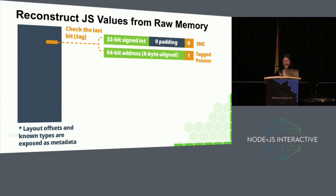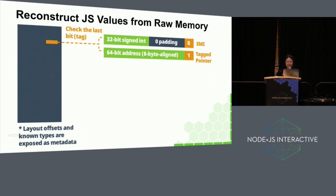Now let's see how we can reconstruct a JavaScript value out of the raw memory dump. In V8, heap memories are organized in pages, and within each page, memories are organized in words that are aligned. On a 64-bit machine, the words are 8 bytes. Given an arbitrary address to a word in memory, we can first examine the last bit of the word. If the last bit is zero, then it's a small integer, also known as SMI. On a 64-bit machine, the useful bits of an SMI are the first 32 bits, which store a signed integer. We can then display the value of this word by interpreting those first 32 bits. Most of the time, these SMIs are just primitives pointed to by other values.